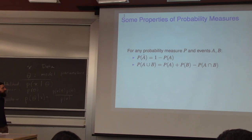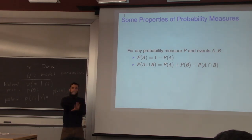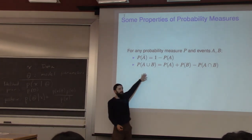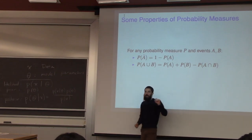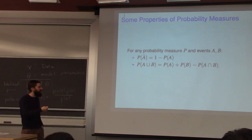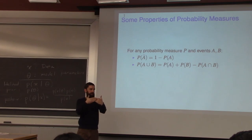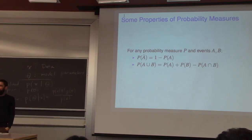Here are two basic rules that come directly from the three axioms. First, the complement rule: the probability of event A not happening is one minus the probability of A. Second, the union rule: when A and B are possibly not disjoint, the probability of A or B happening is P(A) plus P(B) minus P(A intersect B). The way to think about it is that in the intersection where they overlap, you've double-counted the probability when you add P(A) plus P(B), so you have to subtract out one copy of the overlap.